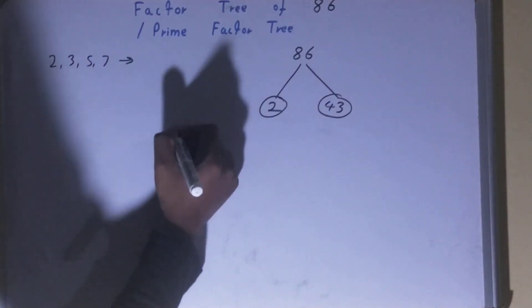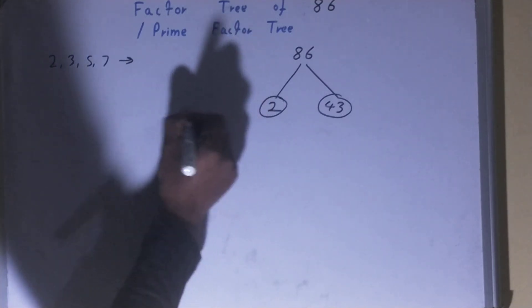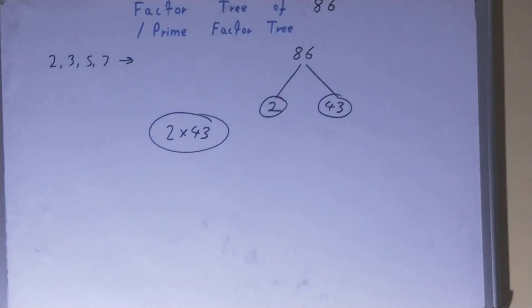Now if you want, you can write it separately in the form of prime factors like this, and that's all about the factor tree of the number 86. So if you found the video helpful, please hit the like button, consider subscribing, and thanks for watching.